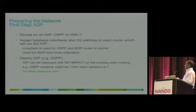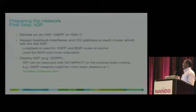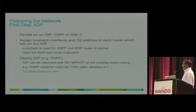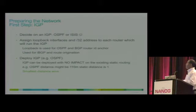If you have a network with static routes, you can deploy IGP without impacting your network, because in most cases static routes have higher preference over IGP. By adding IGP, you are not really changing the routing within your network. Once you deploy IGP and make sure it's working properly, you can start removing the static routes and make your whole network run on IGP.